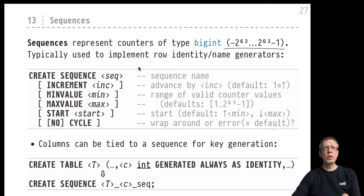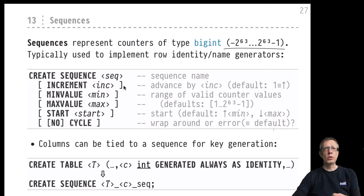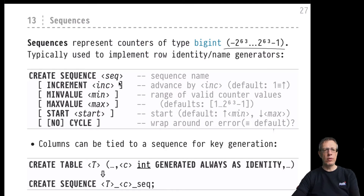Such sequences are created in SQL using the CREATE SEQUENCE syntax. A sequence is assigned a name which we can later use to query the sequence and manipulate its counter value. When we create a sequence, a number of configuration options for the counter can be specified — for example, the increment value, so when a value is requested from the sequence the current counter state is incremented by this amount.